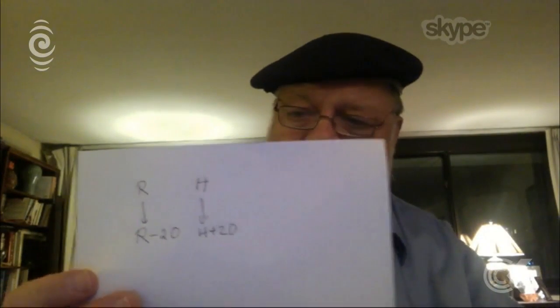After Rene gave Horne $20, Rene had $20 less because he or she gave away $20. So Rene now has R minus 20. Horne, on the other hand, has changed how much he has from H — he now is $20 ahead. So he now has H plus 20. I've represented this with an arrow showing what's changed: H went to H plus 20, R went to R minus 20.